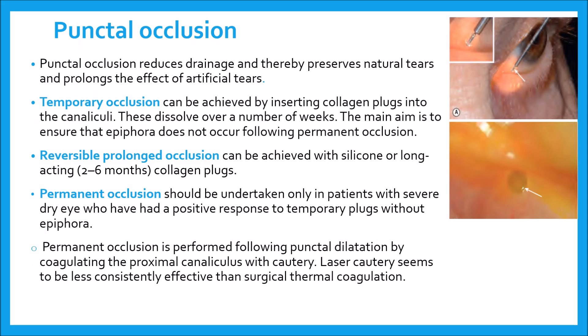After tear substitutes, there is a role for punctal occlusion. Punctal occlusion reduces drainage and thereby preserves natural tears and prolongs the effect of artificial tears. It is of greatest value in patients with moderate to severe keratoconjunctivitis sicca who have not responded to frequent instillation of topical agents. Occlusion can be temporary, reversible, or permanent. Temporary occlusion can be achieved by inserting collagen plugs into the puncta; they dissolve over a number of weeks.